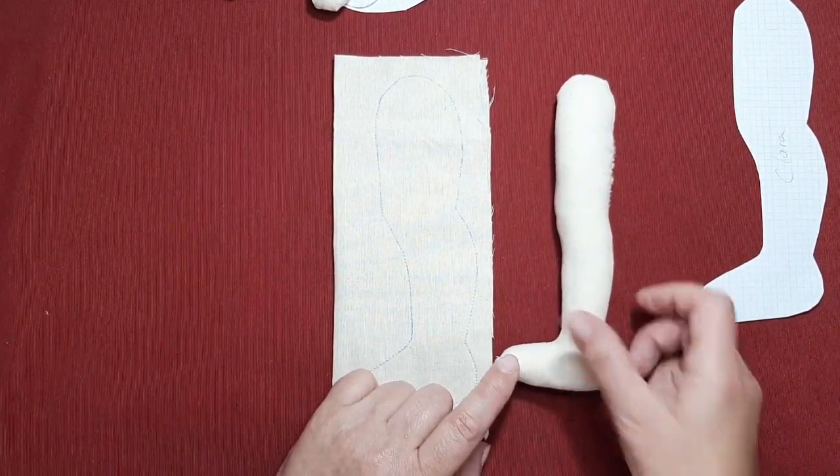Bueno, pues yo ya tengo a Clara vestida. ¿Veis? No tiene ningún problema para mantenerse de pie con este tipo de botitas. La dejamos aquí al lado. Y mirad. Yo he cortado los patrones. Os los dejaré después también. Todos y todas las medidas en el taller.